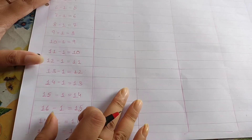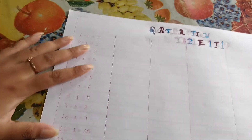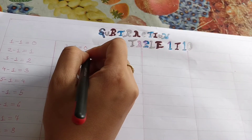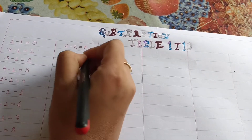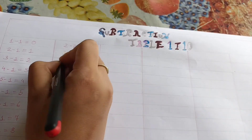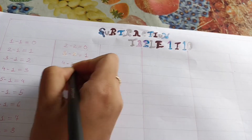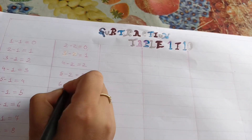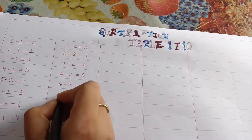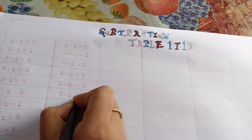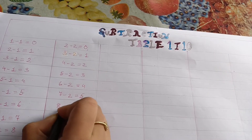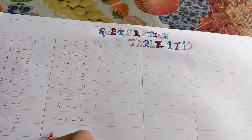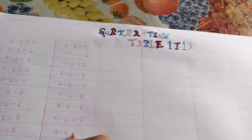Next, table 2. 2 minus 2 is equal to 0. Next, 3 minus 2 is equal to 1. Next, 4 minus 2 is equal to 2. Next, 5 minus 2 is equal to 3. Next, 6 minus 2 is equal to 4. Next, 7 minus 2 is equal to 5. Next, 8 minus 2 is equal to 6. Next, 9 minus 2 is equal to 7. Next, 10 minus 2 is equal to 8.